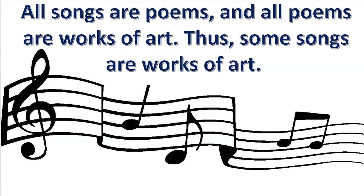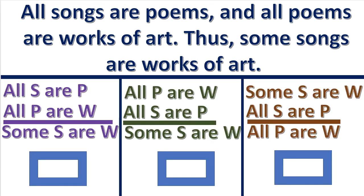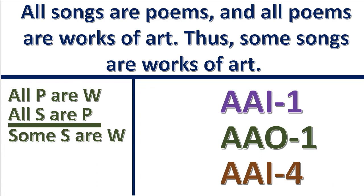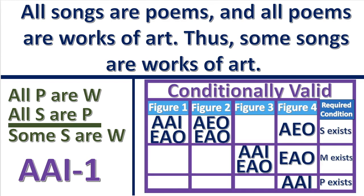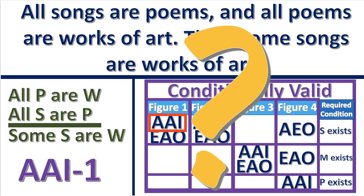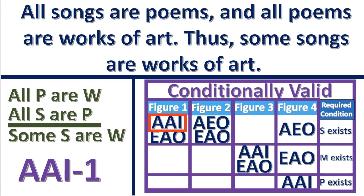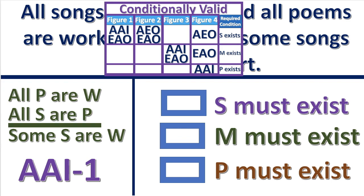Next practice problem: symbolize this syllogism and then choose the correct standard form. This is the correct form. Which combination of mood and figure conveys the form of the syllogism? This is the correct form. Since this form is on the list of conditionally valid forms, what condition must be met for the syllogism to be valid from the Aristotelian standpoint? S must exist.